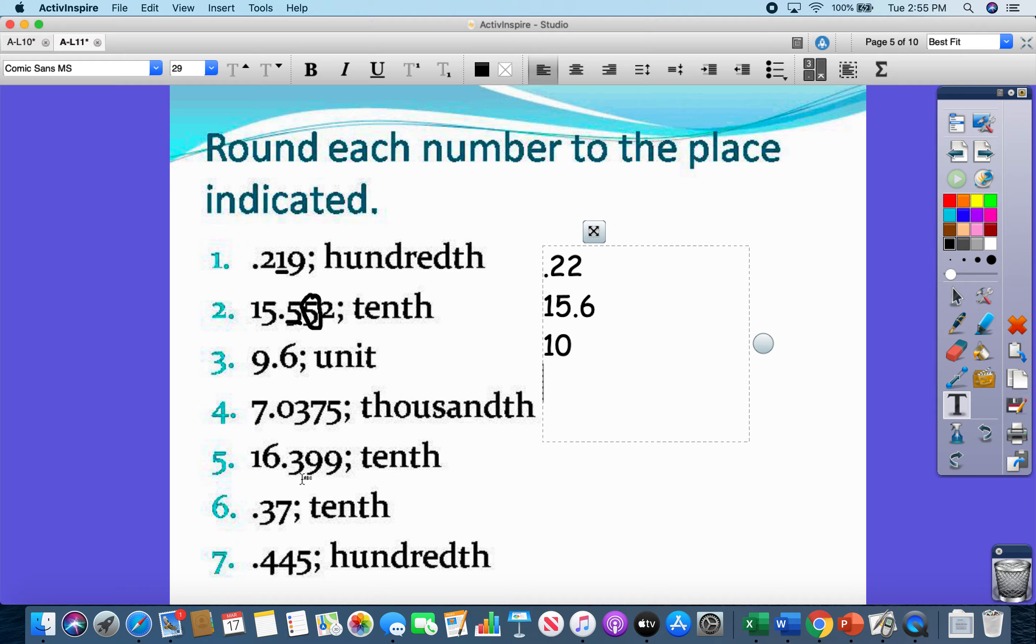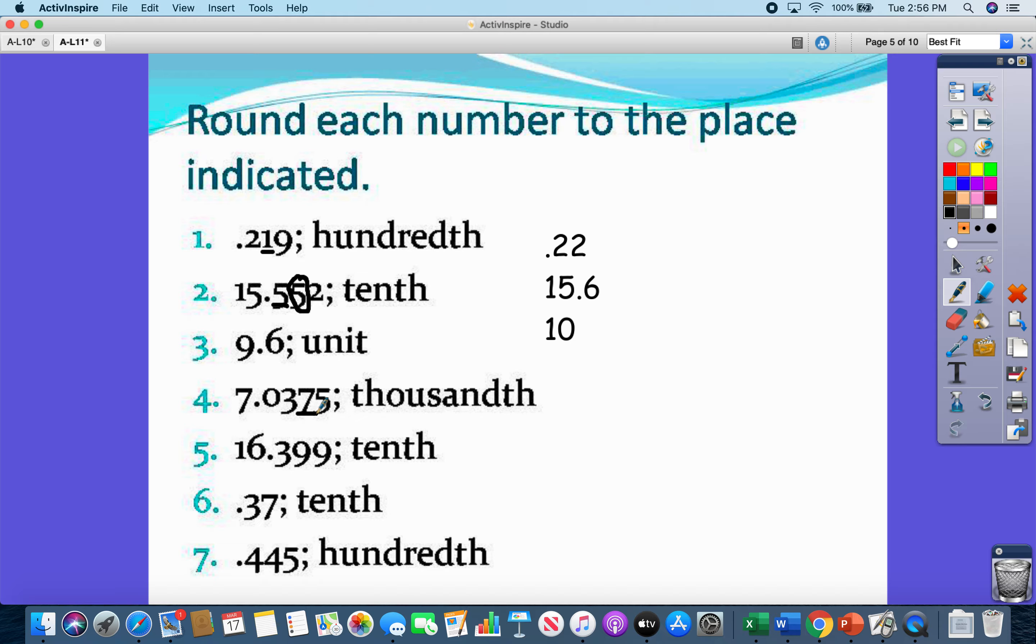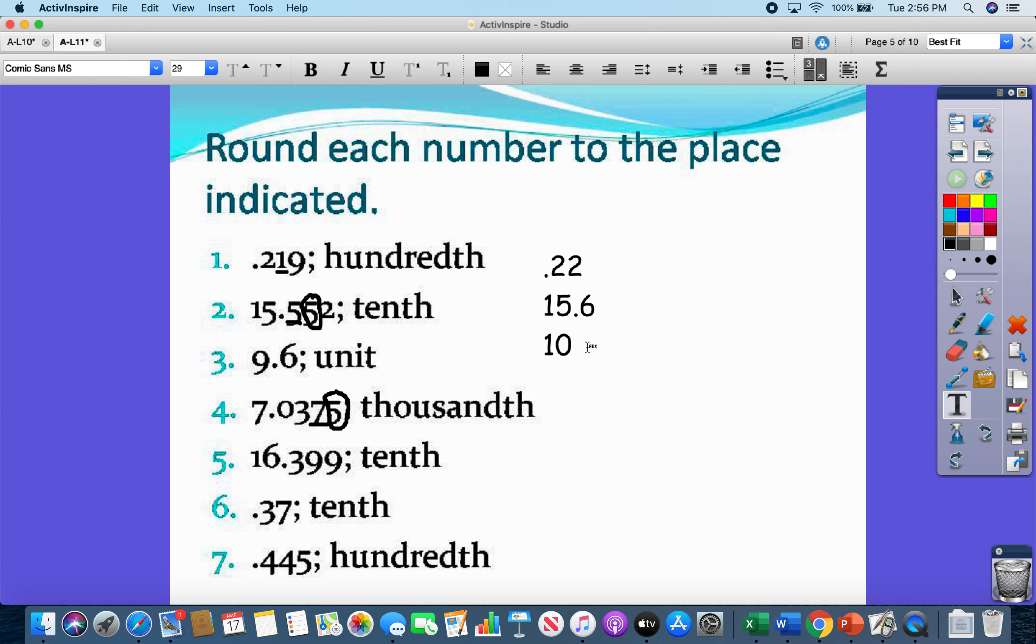All right. Now, this one we didn't go over, but it shouldn't be too bad. All right. It's 7 and 375 ten thousandths. So it wants us to round to the thousandths place. So that means I'm going to look at the number to the right, which is the 5. 5 rounds which way? Up.